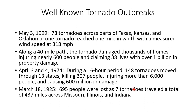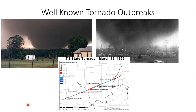The March 18, 1925 Tri-State Tornado resulted in 695 fatalities. Seven tornadoes traveled a total of 437 miles across Missouri, Illinois, and Indiana — just a truly remarkable and devastating event in tornado history.